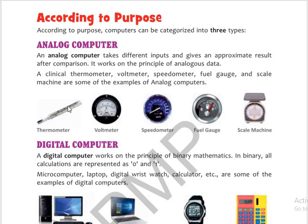In analog computers, we do not get the exact result; we get an approximate result because they work on the principle of analogous data. Similarly, with the speedometer, sometimes our speed is 50 km/h, sometimes 60 km/h, sometimes 10 km/h — there is a lot of variation. So analog computers give approximate results.